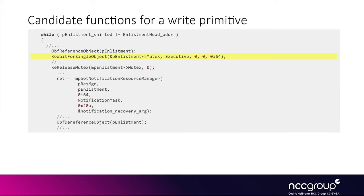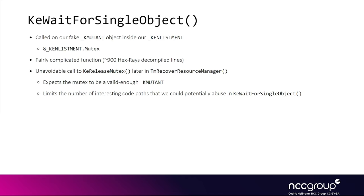The next function to analyze is ke_wait_for_single_object. As we saw earlier, this function is passed the k-enlistment mutex, which is a k-mutant structure inside our fake userland k-enlistment, so we actually control the k-mutant content. The ke_wait_for_single_object function is fairly complicated, so it has some interesting potential. There's an important caveat: later in the function, before we make the recovery thread exit the loop, we must also have this same mutex passed through ke_release_mutex, which expects the mutex to be a valid enough k-mutant. So we decided to look at something else — though it's actually a very interesting function and maybe there is some kind of write primitive in there.